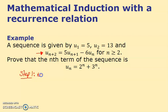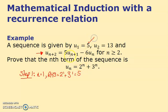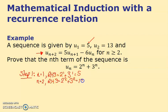With n equal to 1, you basically look at the right-hand side of this formula and say: the right-hand side equals 2¹ + 3¹, which is obviously 5. And yes, that's 5 — it's worked. When n equals 2, the right-hand side equals 2² + 3², which is 4 + 9 = 13. Yep, that's worked.